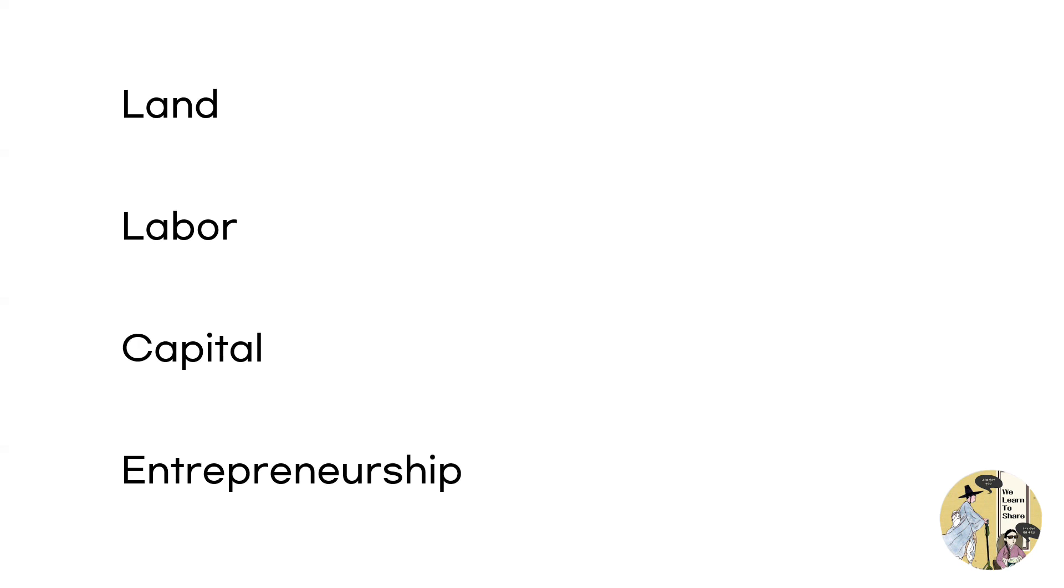The third factor of production is capital, which are the equipment and machinery that are used to produce something. So for example, computers, buildings, or a certain type of tool that are used to produce something can be considered as capital.